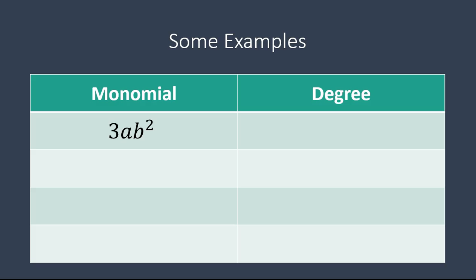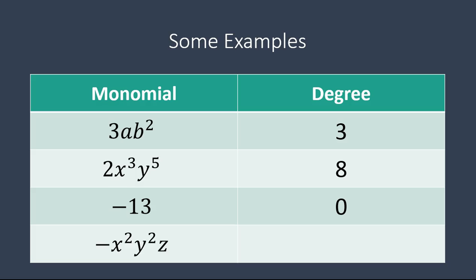Here are some other examples of monomials that have more than one part. 3ab squared — what's the degree? It's 3: 1 for a and 2 for b. How about 2x to the power of 3, y to the power of 5? That gives you 8. How about negative 13? There's a number again — the degree of a number is 0. And our last one, x squared, y squared, z: 2 plus 2 plus 1 gives me 5.